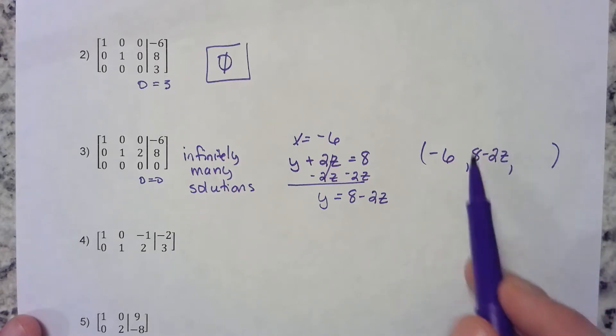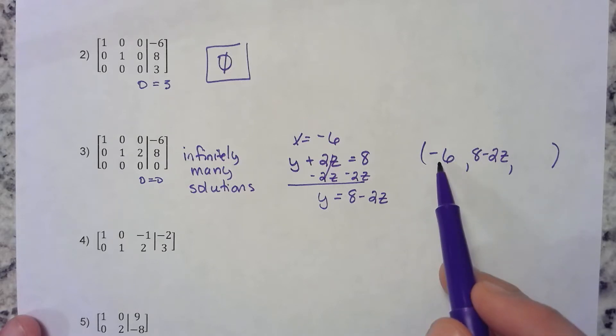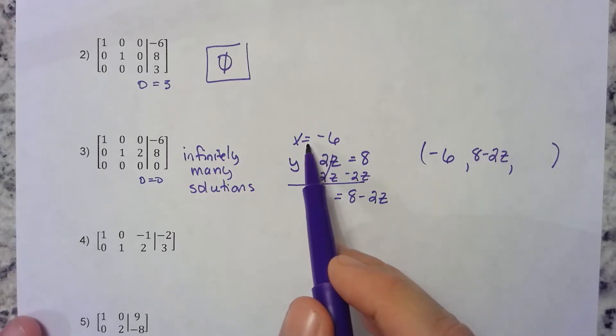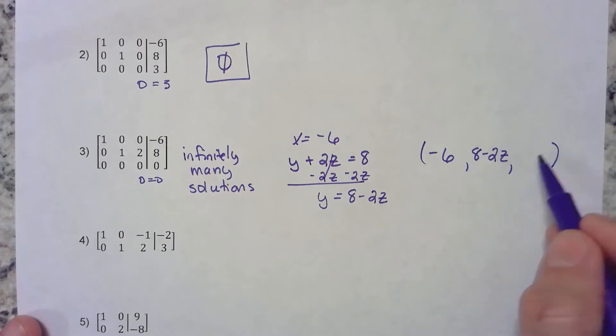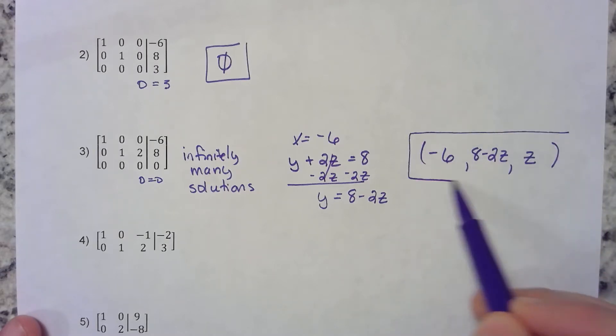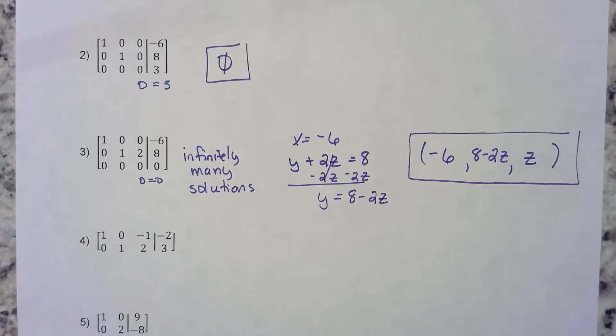We know x is negative 6, y is 8 minus 2z. Since this has a z in it, this doesn't have any variable—it doesn't need to because we were told it's negative 6. This has a z in it, which means in the z place we just need to put a z. So this is our general form of the ordered triplet for the solution to that system.